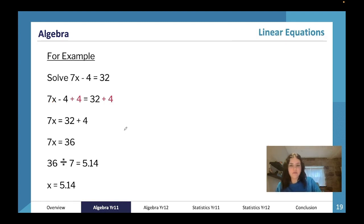So for example, solve 7x minus 4 equals 32. We're going to jump back to some questions now. The first thing I would do - 7x minus 4 equals 32 - is I would add 4 to both sides to get 7x on its own. Now that I have 7x equals 36, I'm just going to divide each side by 7 to get x on its own. x equals 5.14.